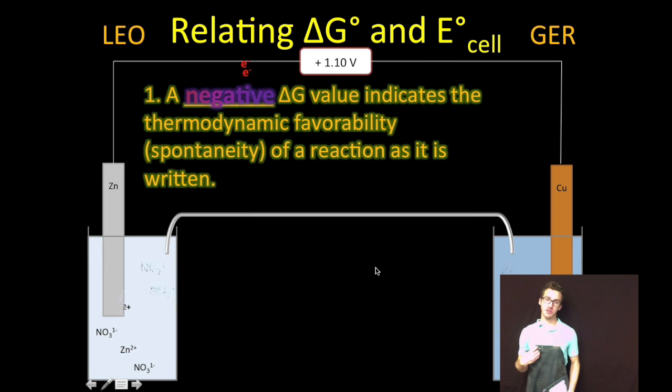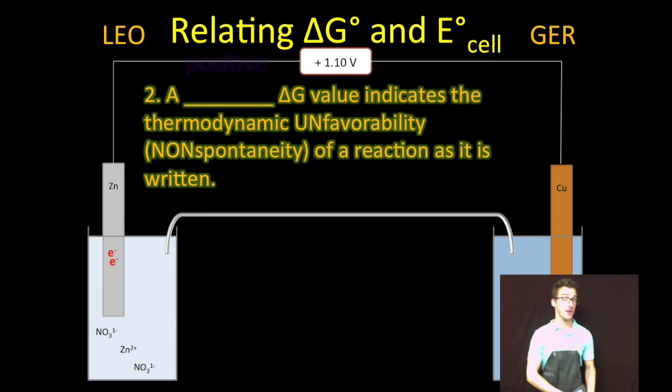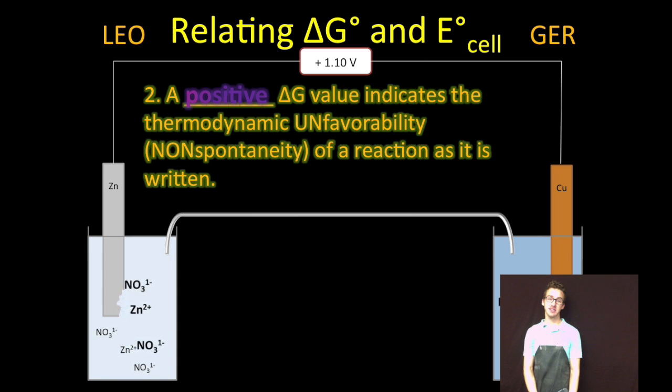All I want you to recognize is that when you have a negative value for Delta G, it indicates the reaction is thermodynamically favorable, meaning the reaction as written is spontaneous. If you have a positive value for Delta G, it indicates the reaction is thermodynamically unfavorable and not spontaneous as written.